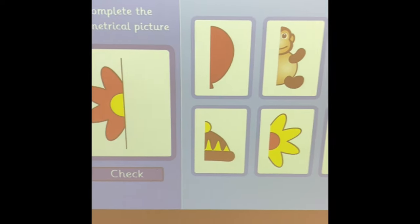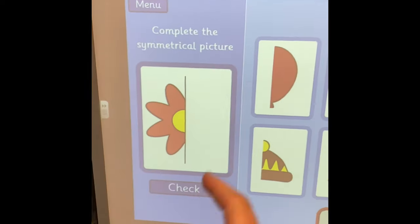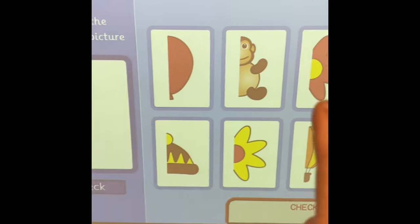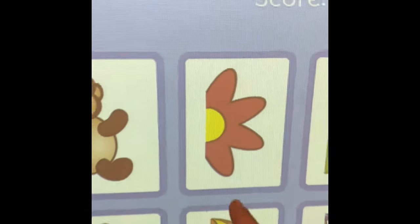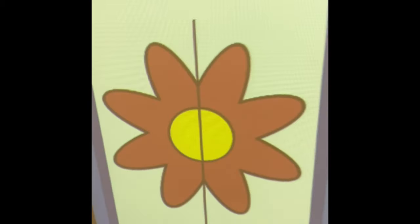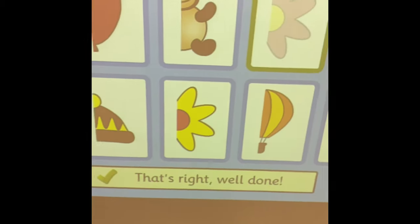Here we have the picture one. So we have a flower, but we only have half of it. So we need to find the symmetrical part. There it is. Perfect. Let's check it. That's right.